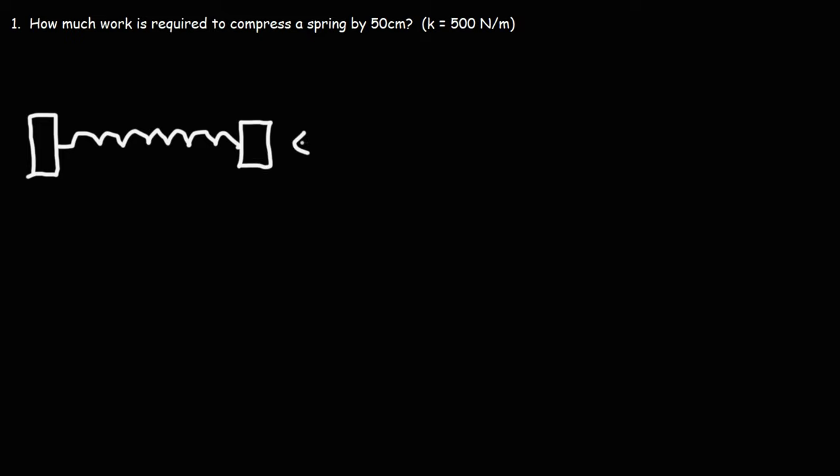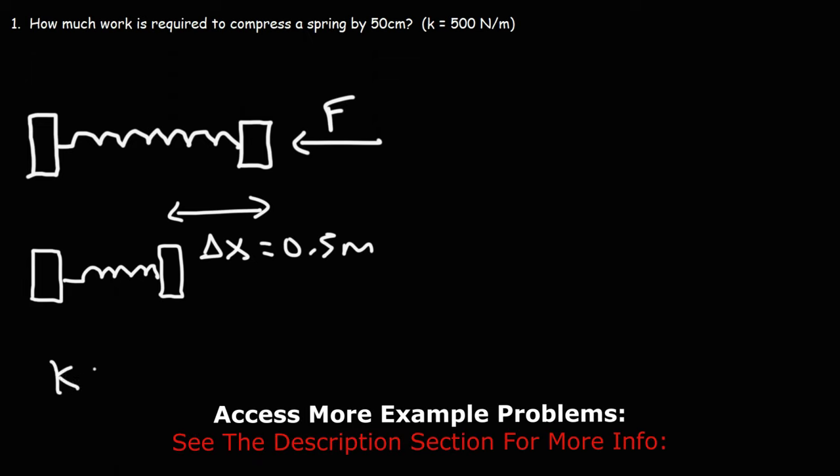And we want to apply a force in order to compress the spring. And we want to compress it by 50 centimeters, which is basically a half of a meter. So we want to compress it by 0.5 meters. How much work is required to do that? And we're given the spring constant k, which is 500 newtons per meter.